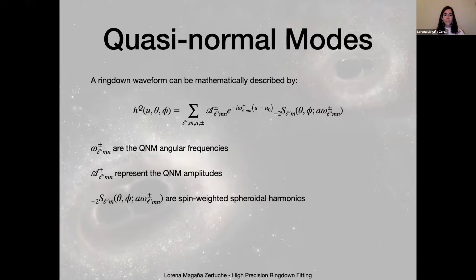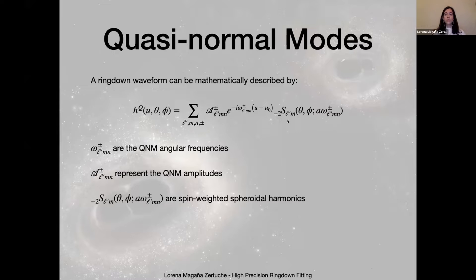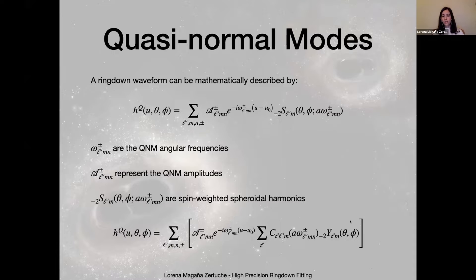Let me begin by giving a quick overview on quasi-normal modes. A ring-down waveform can be described mathematically where it depends on the quasi-normal mode amplitude that depends on the mode LMN, and on this decaying sinusoidal which has the quasi-normal mode frequency. Then we have the last term, which is a spin-weight function — a spheroidal harmonic. Instead of working with spheroidal harmonics, we switch over to spherical harmonic functions. The trade-off is that we have to take into account this C_{LL'M}, which is our spherical-spheroidal mixing coefficient to go from one function to the other.